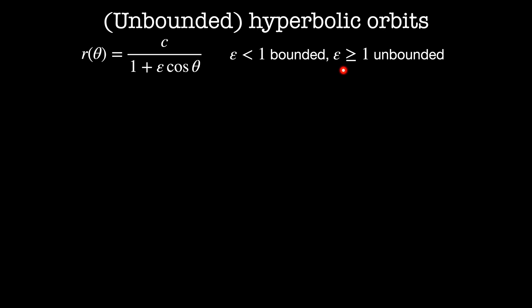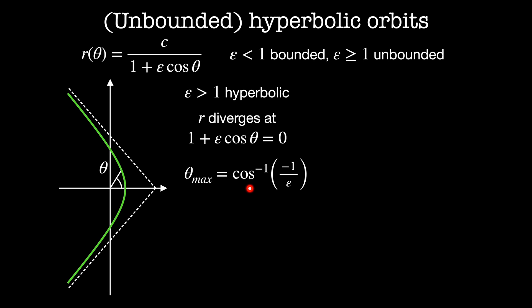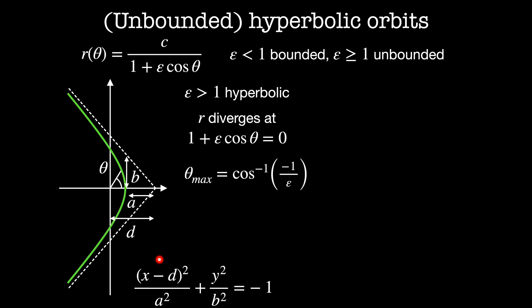For unbounded orbits, epsilon is greater than or equal to one. When epsilon is strictly greater than one, we have hyperbolic orbits. The radius diverges when 1/epsilon + cos theta = 0, so the maximum angle is the inverse cosine of minus 1/epsilon. As the orbit approaches theta_max, it asymptotically goes to infinity. Geometrically, A is the distance from closest approach to the intersection of asymptotic lines, B is the perpendicular distance to the asymptote, and D is the distance from the origin to that intersection. The implicit equation for the hyperbola is (x - d)² / a² + y² / b² = minus 1.